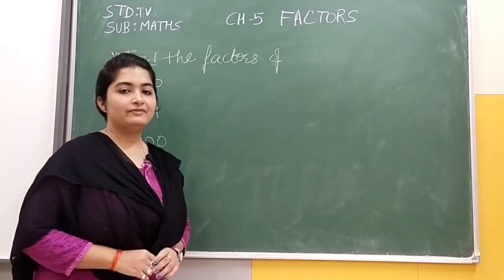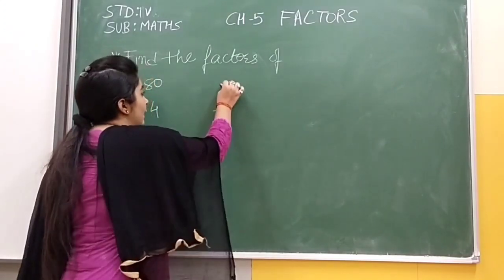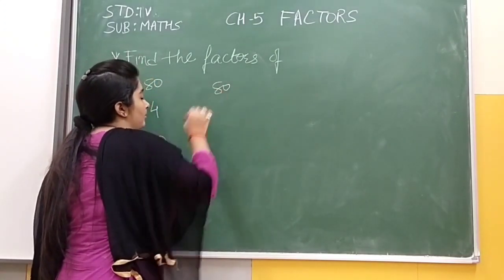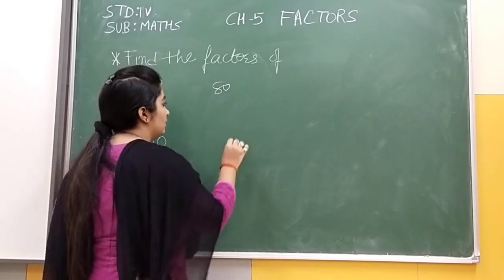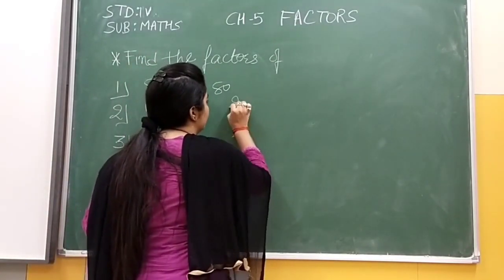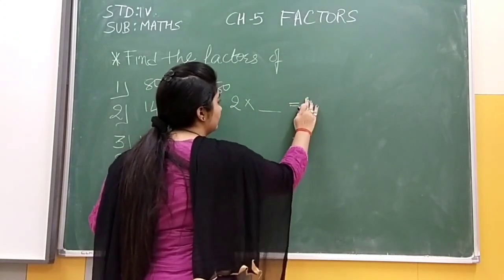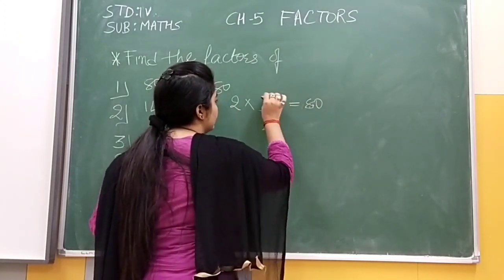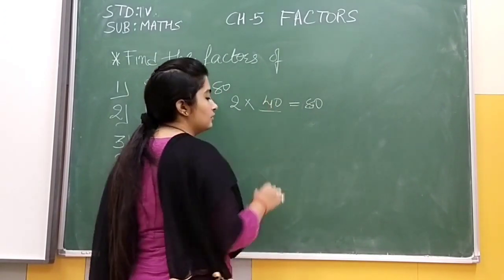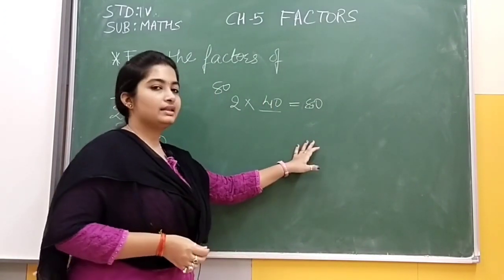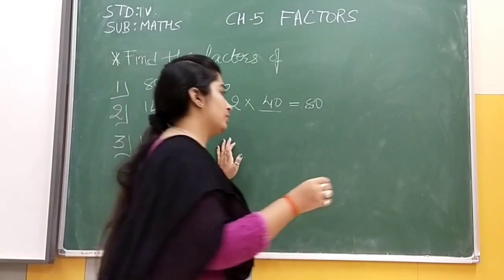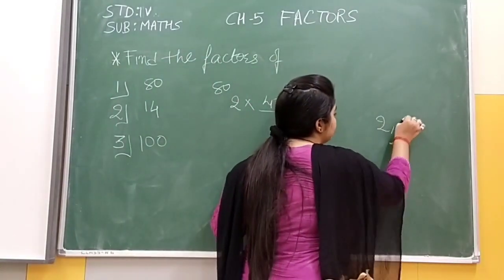Here first of all we will find factors of 80 by using multiplication method. First we will start from 2. 2 into which number makes 80? That is 40. 2 into 40 is 80, so 2 and 40 are factors of 80.